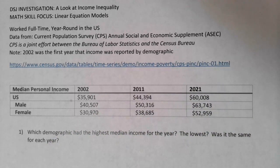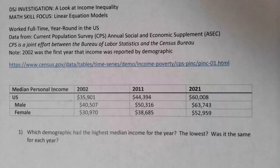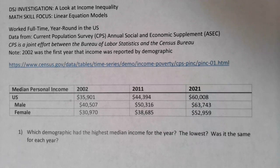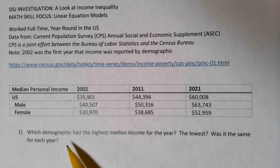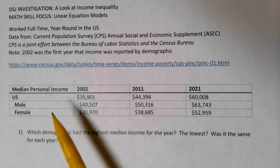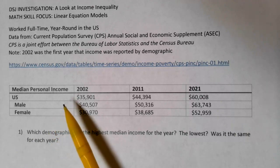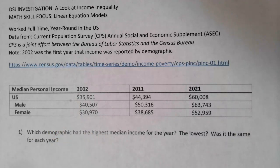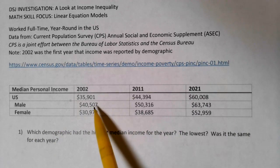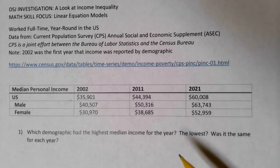Let's take a look at each of these questions so that you know what we're asking about and the ways that we could calculate these particular requests. The first question asks: which demographic had the highest median income for the year, the lowest, and was it the same for each year? Demographic just means a part of the population, and here we're looking at the differences between male and female personal income in the U.S. Each year, we're comparing males to females and seeing which income is higher.